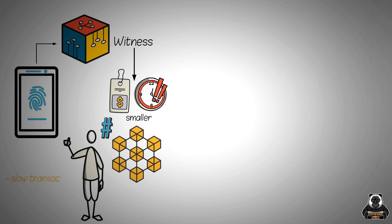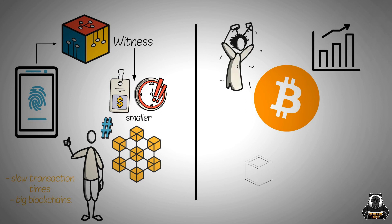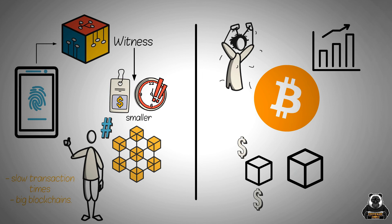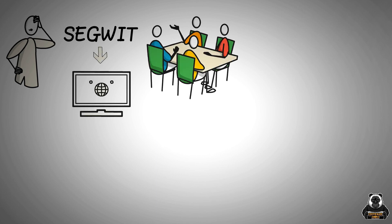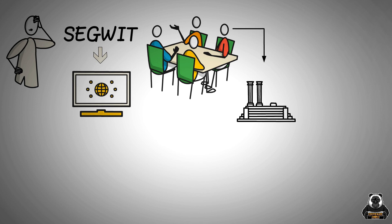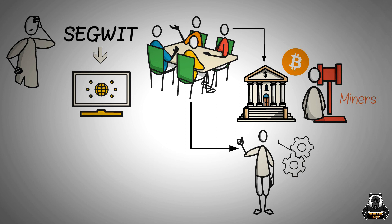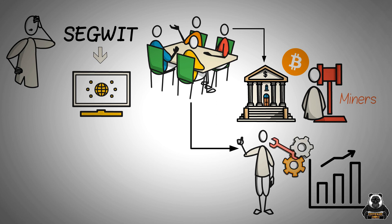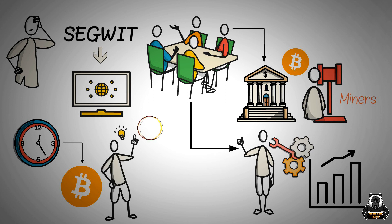SegWit is a great solution to the problem of slow transaction times in big blockchains. Bitcoin is currently facing some scalability issues, and SegWit is a way to increase the block size limit by removing certain data from each transaction, allowing more transactions to fit into each block and helping to improve Bitcoin's scalability. The SegWit solution is not without controversy though — some people are concerned that it could lead to centralization of the Bitcoin network by giving more power to miners who can implement it. However, others believe that SegWit is a positive step for Bitcoin and has the potential to help solve some of the scalability issues the network is currently facing. Only time will tell how SegWit will ultimately affect Bitcoin, but it is definitely a topic you should be aware of if you are interested in the future of this digital currency.